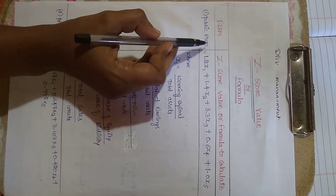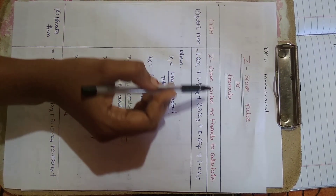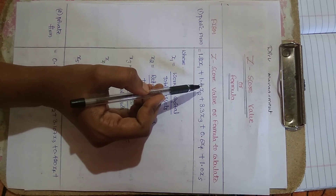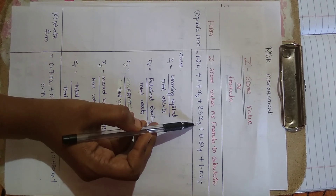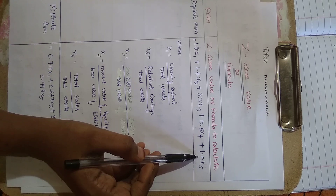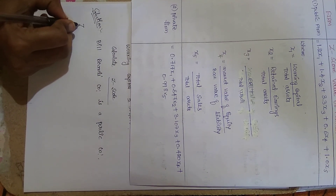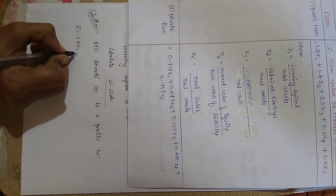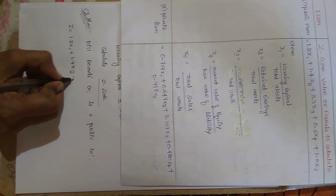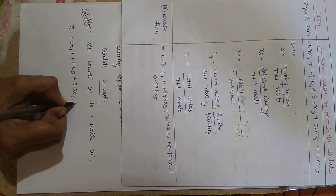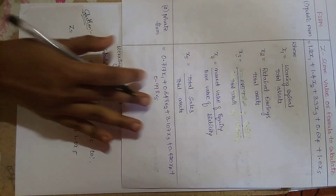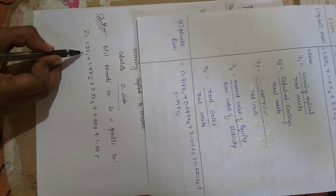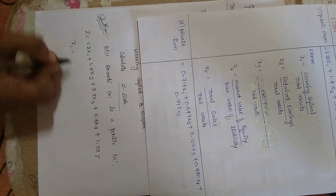In the last video we discussed the formula for a public company. For calculating the Z-score value under the Altman Z-score model, the formula is: Z = 1.2·X1 + 1.4·X2 + 3.3·X3 + 0.6·X4 + 1.0·X5. First we will calculate all the X values.